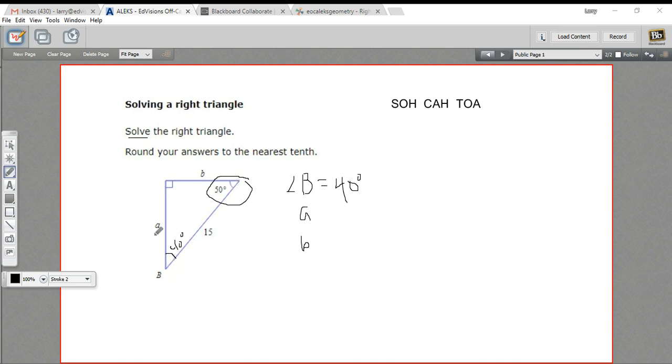And let's say we want to find side A. Side A is the opposite side to this angle of 50 degrees. And then I've got the hypotenuse already given to me here. So I can set up an equation using the sine function, because the sine is the opposite over the hypotenuse. We'd say the sine of 50 degrees equals the opposite, that's A, over the hypotenuse, which is 15.